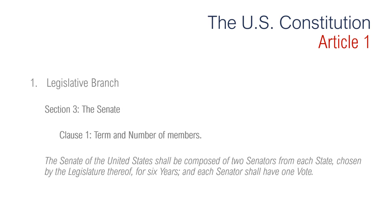Section 3 of Article 1 is regarding the Senate. Clause 1 is regarding the term and number of members of the Senate. It says, 'The Senate of the United States shall be composed of two senators from each state chosen by the legislature thereof for six years, and each senator shall have one vote.' Now this part of the Constitution has since been amended. Every state has two senators, each of whom serves for six years and has one vote in the upper chamber.